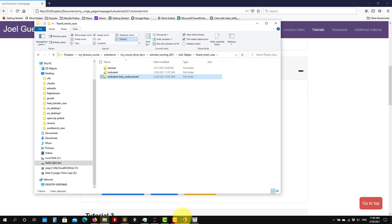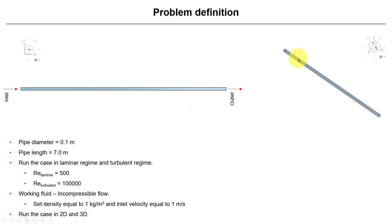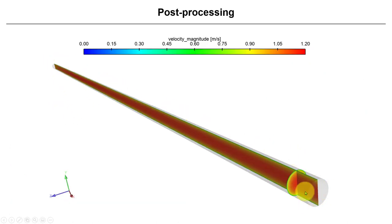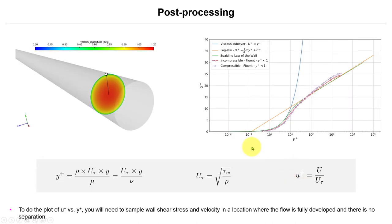Let me show you the case presentation. We're going to do fully 3D — no symmetry — though you can use symmetry later if you want. We have the 3D domain and a cut plane in the middle. I'll show you the sampling location and how to do the sampling outside of Fluent, which is the way I prefer. I use a Python script for that. You need to find a location in your domain, place a line normal to the wall at that location, and then do the sampling.